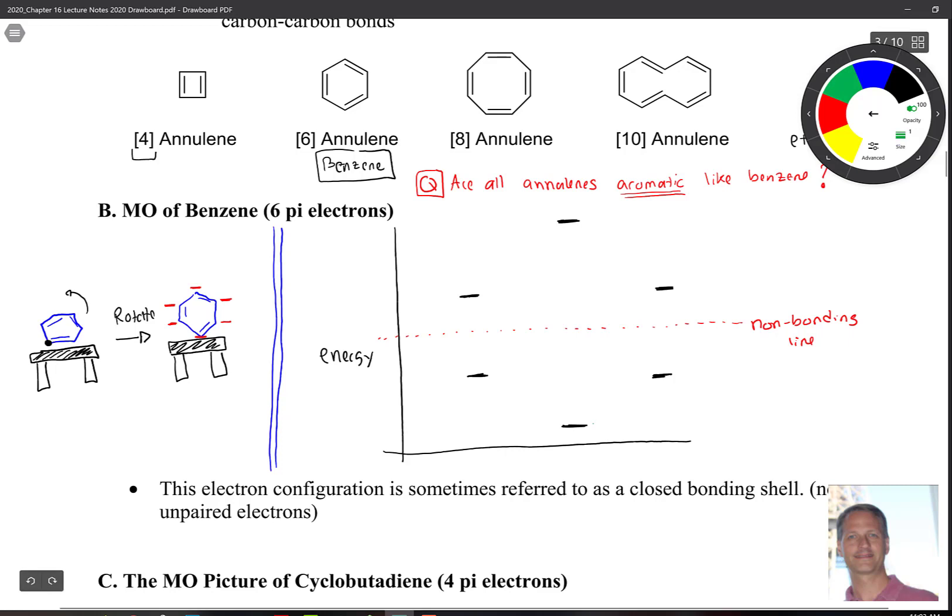Now let's start labeling this. This is pi one, and the two shoulders down here at the bottom are pi two and three. It doesn't matter which one is which. Those are bonding MOs. And then up here, we have pi four star, pi five star, and then pi six star. Those fellows up here are going to be your anti-bonding MOs.